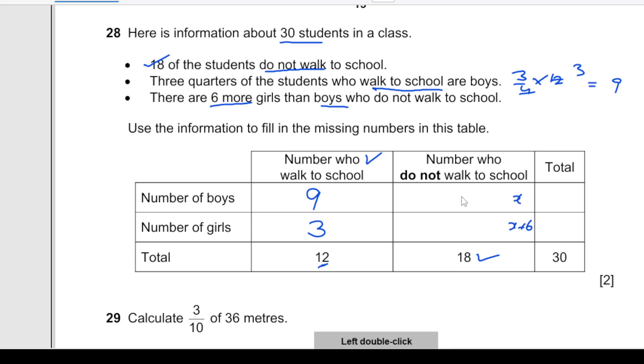If this is 6, then this one is 12, which is 6 more than that. 6 plus 12 is 18.